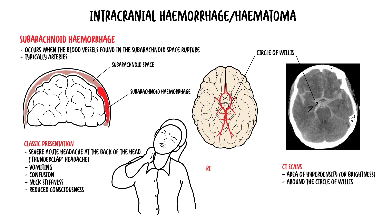Importantly, risk factors for a subarachnoid hemorrhage include being female, alcohol use, cocaine use, and autosomal dominant polycystic kidney disease.